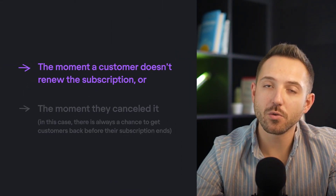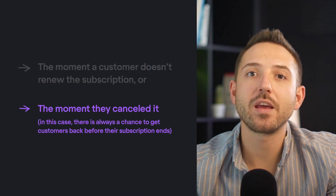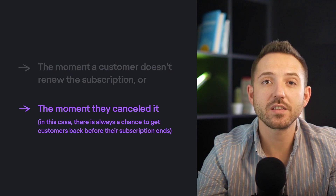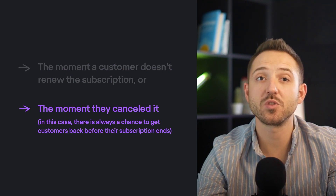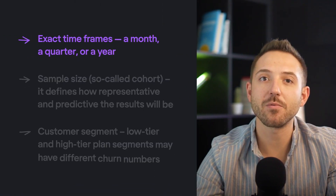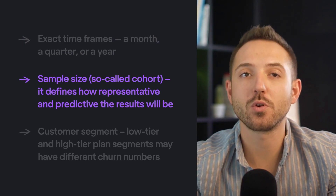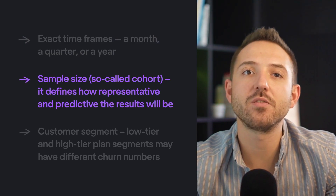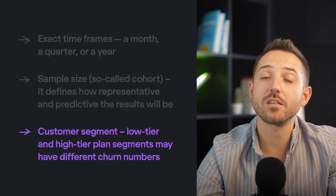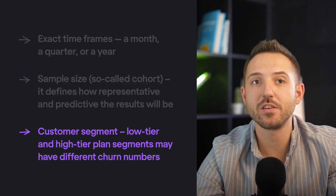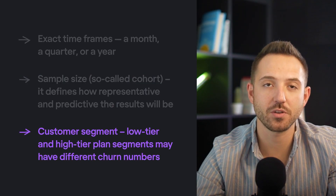Firstly, you need to define what you will take as the moment of churn — either the moment a customer doesn't renew their subscription or the moment they cancel it. In the latter case, there is always a chance to get customers back before their subscription ends. Also, before calculation starts, it's useful to decide on exact time frames: a month, a quarter, or a year. Consider your sample size, or cohort, which defines how representative and predictive the results will be. And consider customer segment — low-tier and high-tier plan segments may have different churn numbers.